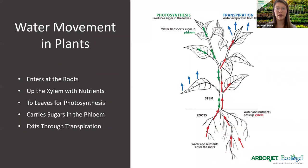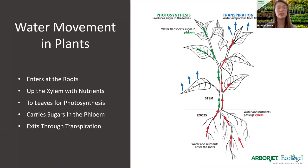This diagram shows the flow of how everything moves within a plant. Everything starts in the root system — those fine root hairs hold the water and all the nutrients come up through there. It enters the root, up through the xylem with nutrients, to the leaves for photosynthesis. Everything is a process. It also carries sugars through the phloem and exits through transpiration — whenever it gives off and evaporates.